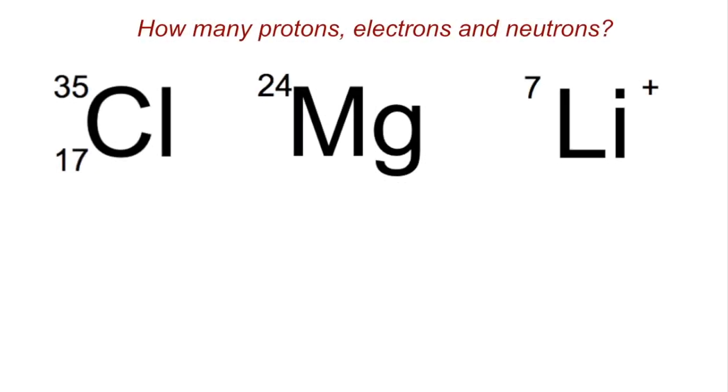So we'll start with the protons. You'll notice that I've missed out the atomic number for magnesium and lithium. I've done that on purpose because the exam boards sometimes like to do that. All you need to do is look at the data sheet periodic table and find the atomic numbers. So therefore, we've got 17 protons in chlorine, 12 in magnesium, and 3 in lithium.